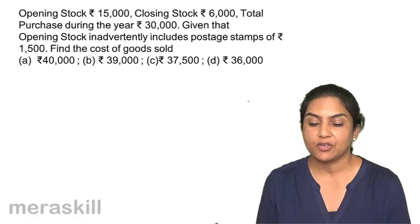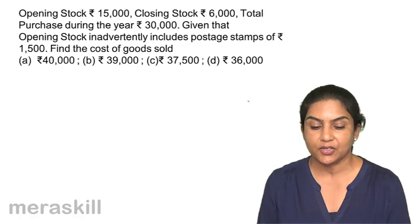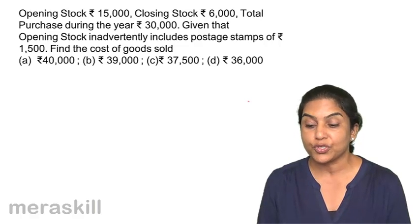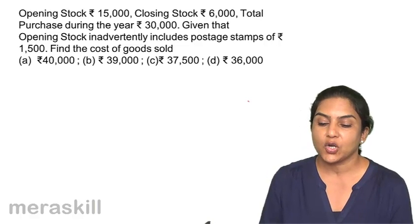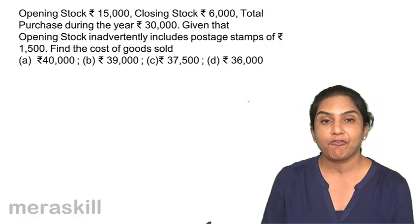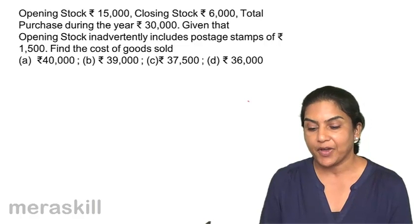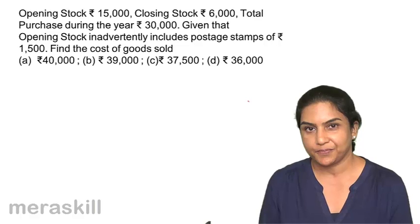Next: opening stock 15,000, closing stock 6,000, total purchases during the year 30,000. Given that opening stock inadvertently includes postage stamps of 1,500, find the cost of goods sold. Options: A 40,000, B 39,000, C 37,500, D 36,000.